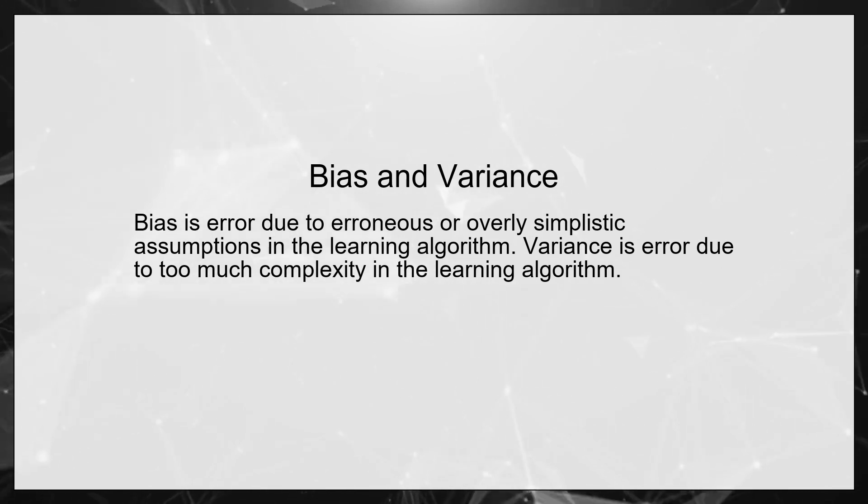Bias and Variance. Bias is error due to erroneous or overly simplistic assumptions in the learning algorithm. Variance is error due to too much complexity in the learning algorithm.